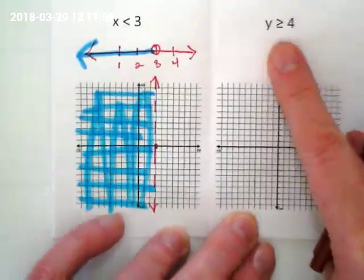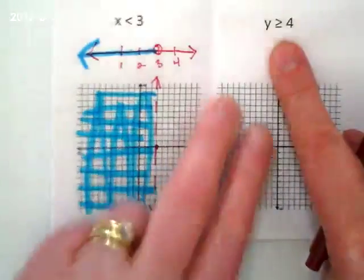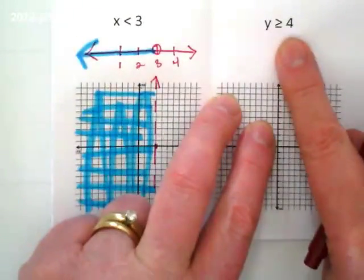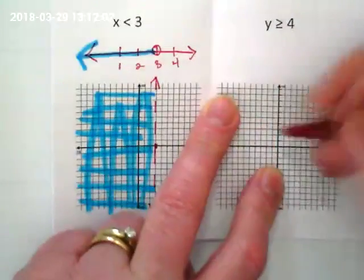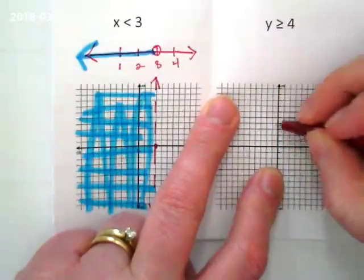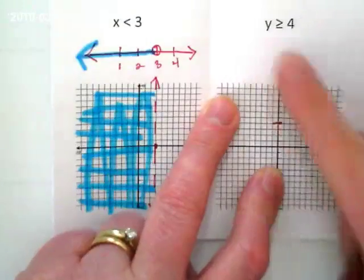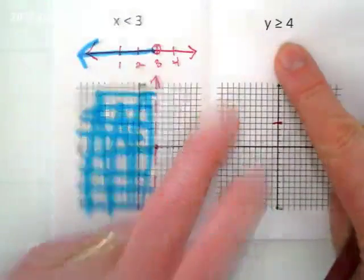It's going to be zero. Where is this one? On the y-axis at four. So find the four. Solid or dashed? Solid.